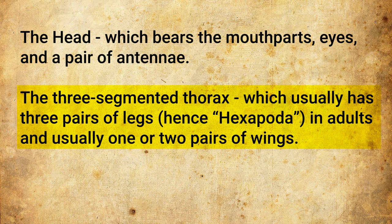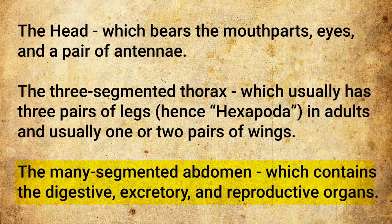The second region is the thorax, which usually has three pairs of legs and in adults, usually one or two pairs of wings. Third is the many-segmented abdomen, which contains the digestive, excretory, and reproductive organs.